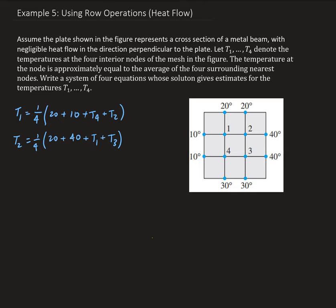Moving to node 3: its surrounding points are node 2, node 4, and two boundary points. So the temperature at node 3 is T3 = one-fourth of (40 + 30 + 30 + T4 + T2).